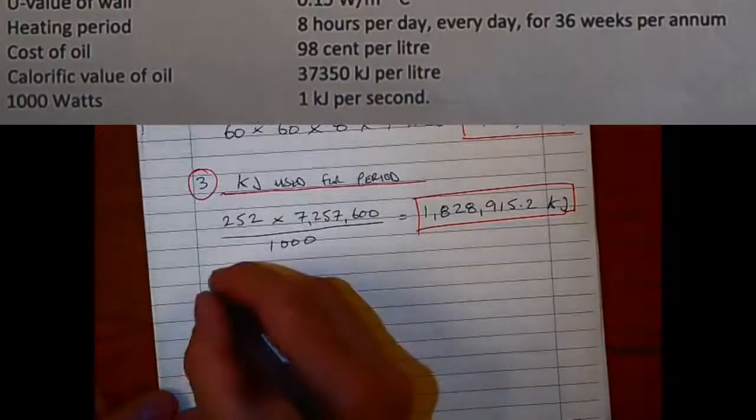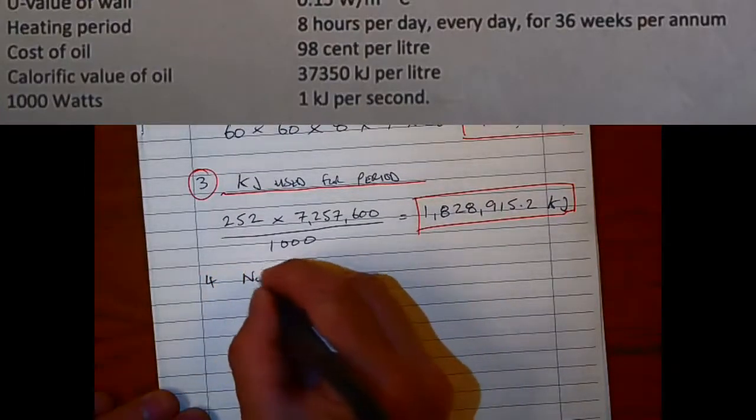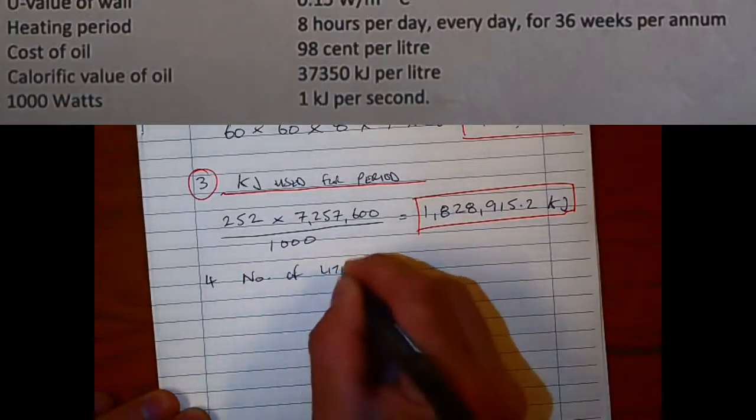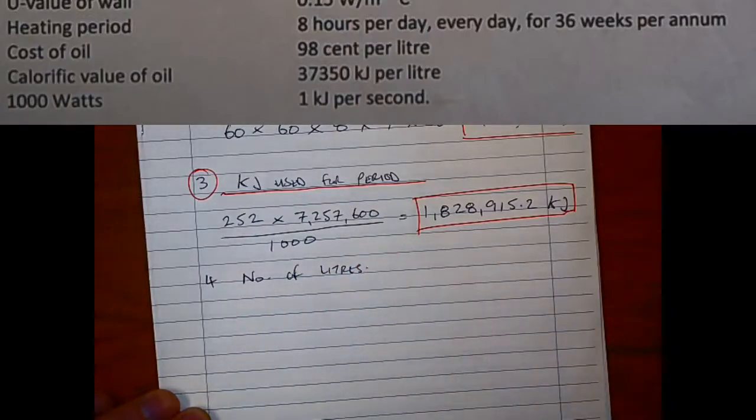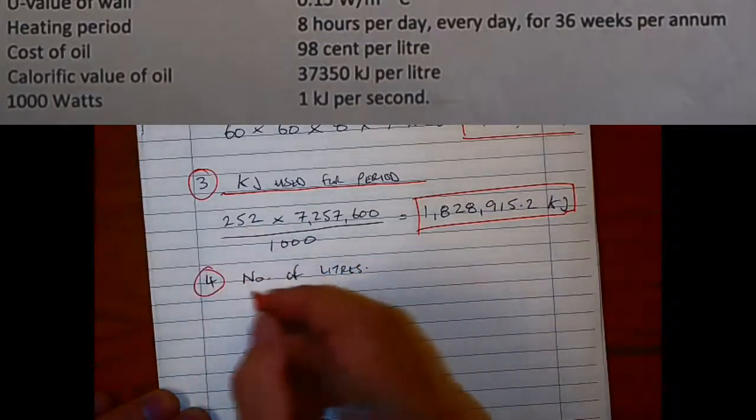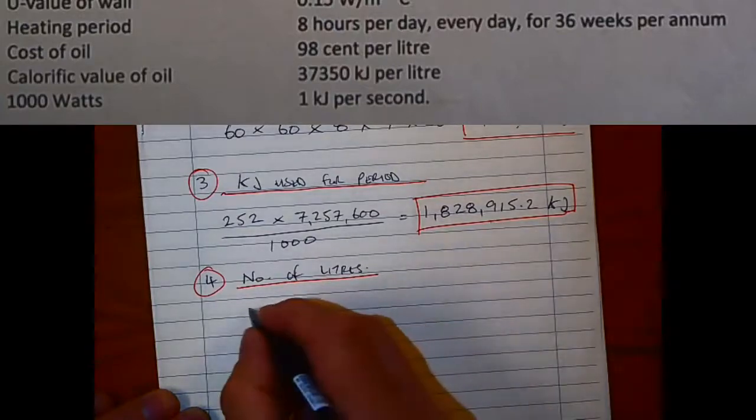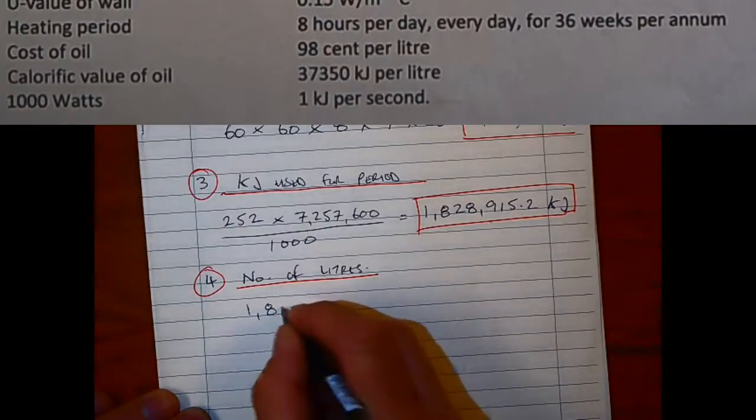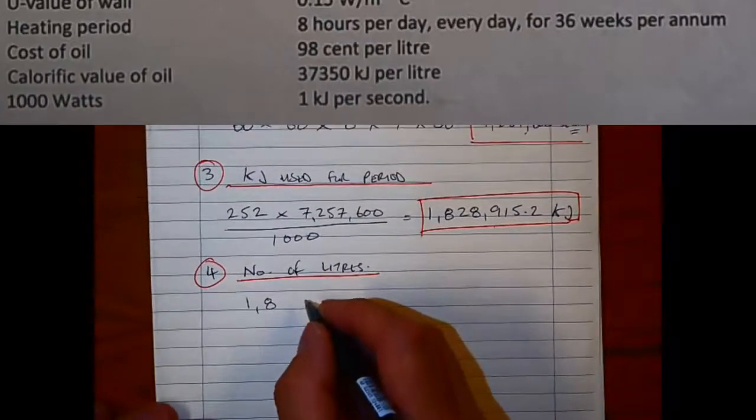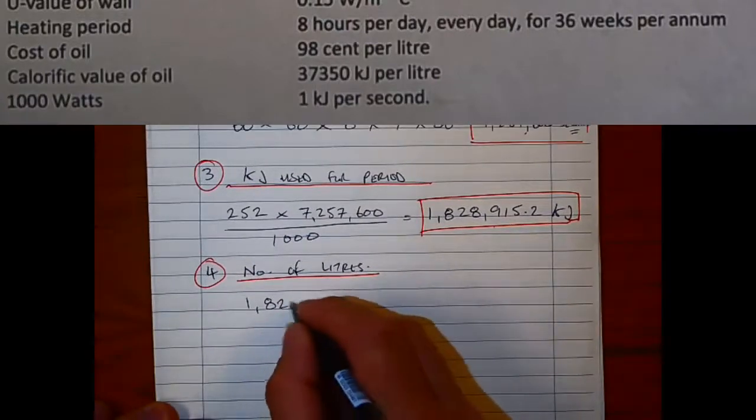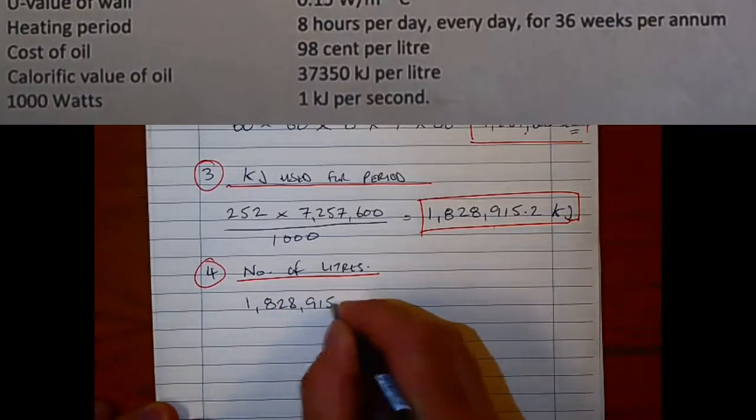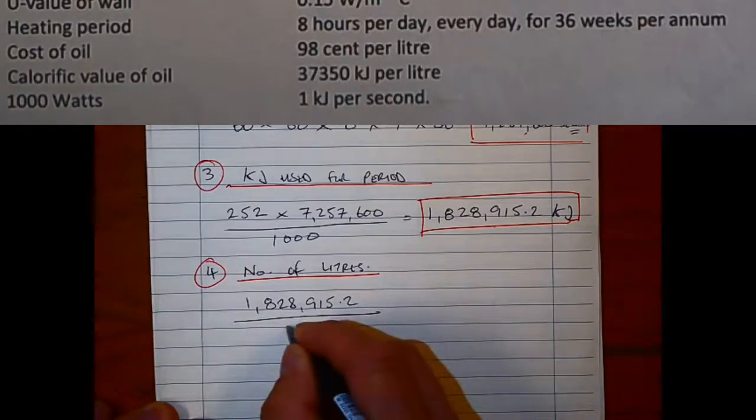You'll see now from the other second half of that part of the question here, I've highlighted it here again—you've got to look at the calorific value of oil above here to work out the number of liters. We're told it's 37,350, which is normally fairly standard as it's used. We're going to divide our number of kilojoules for that heating period by the 37,350 to work out how many liters that we have. So we're calculating the number of liters.